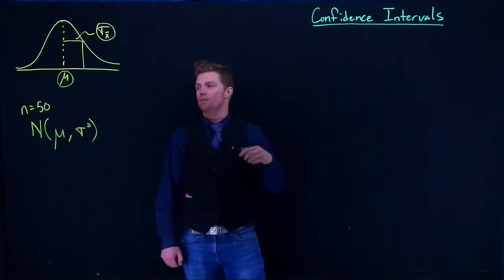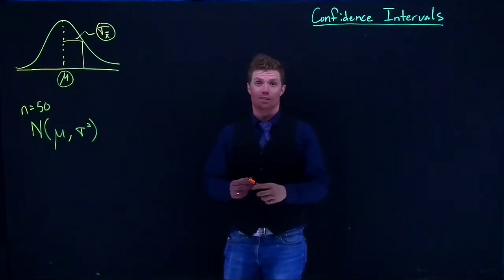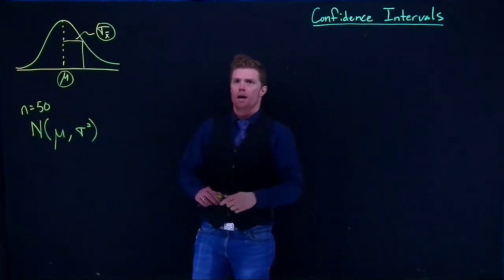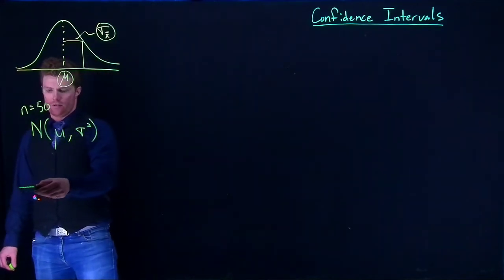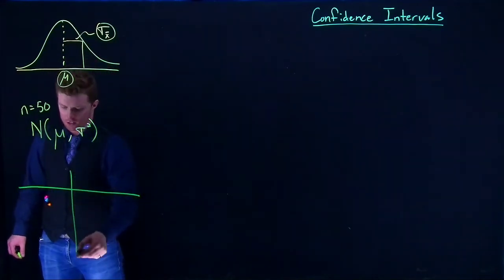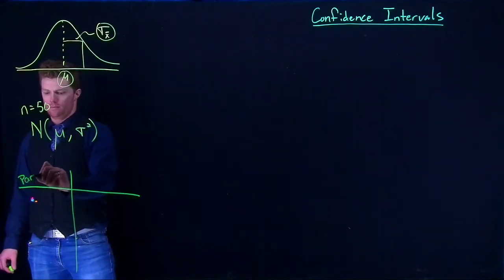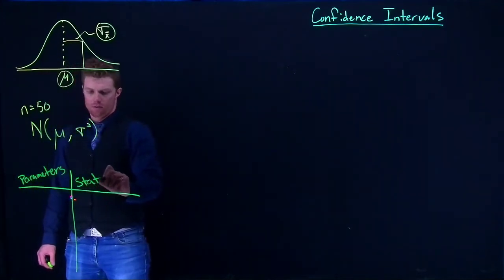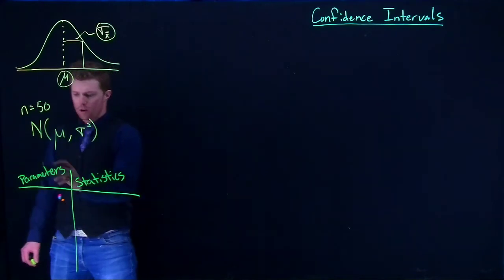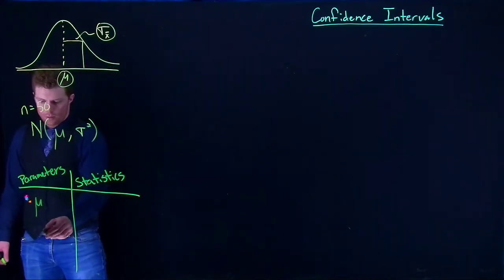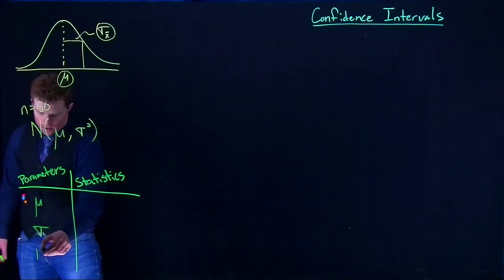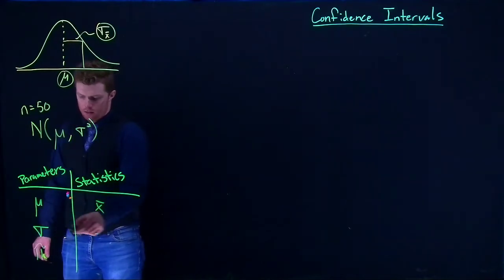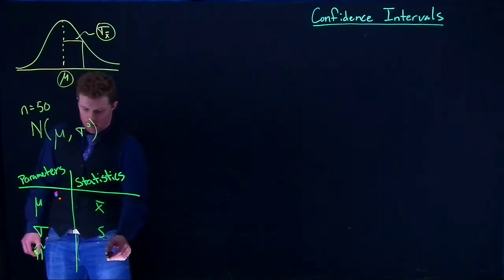Let me start off talking about point estimators, and then we'll move on to exactly how confidence intervals work. We know that we have these different things called parameters and statistics. For parameters we had mu, sigma, and pi. For statistics this was x-bar, s, and p.